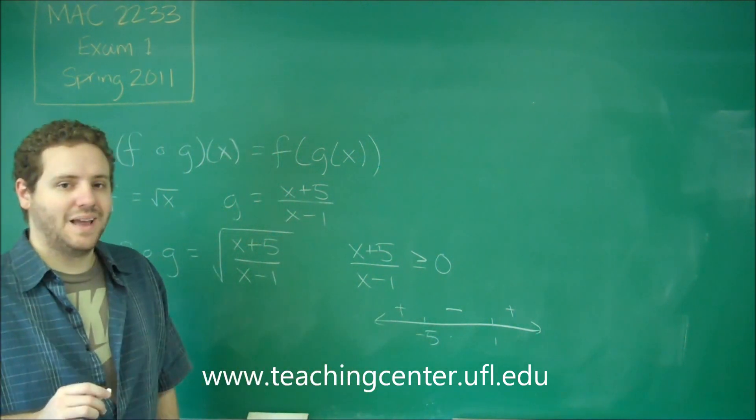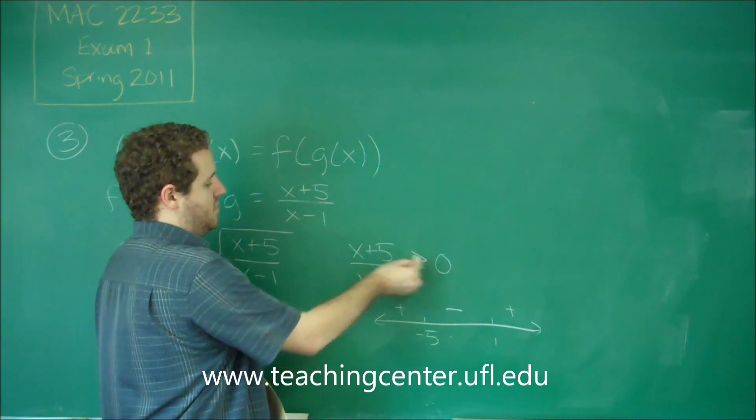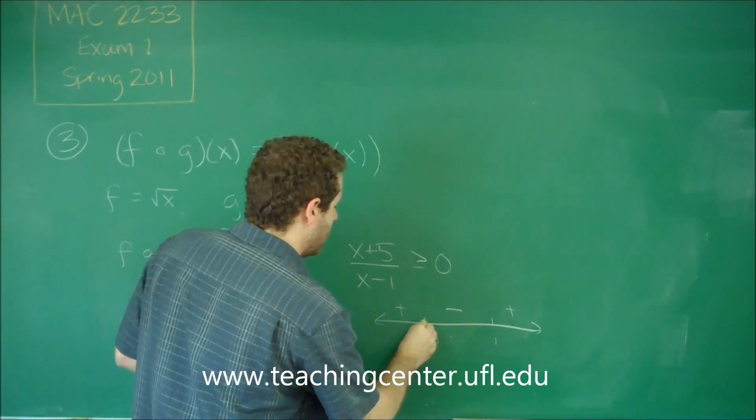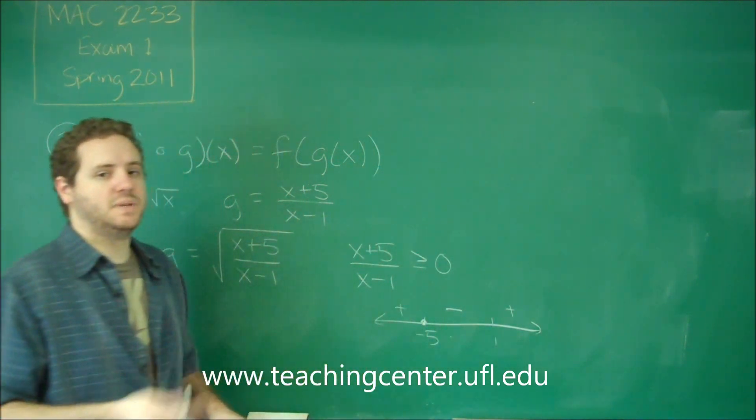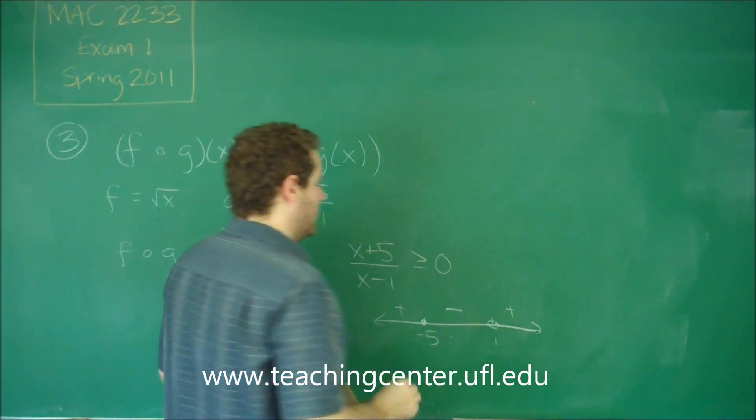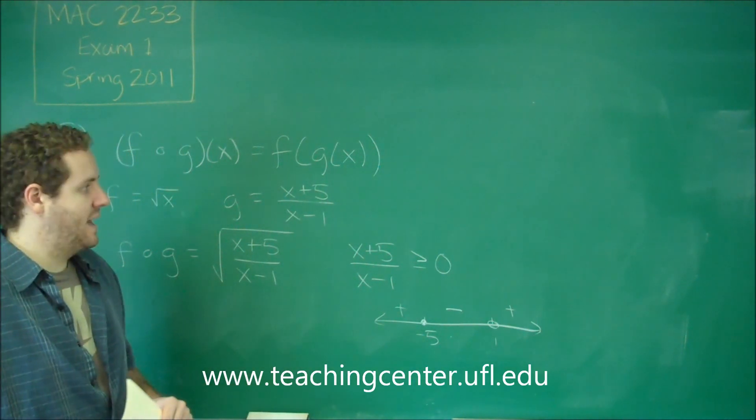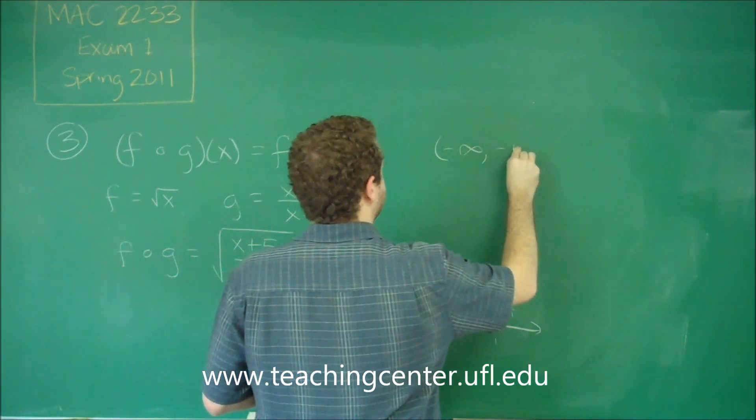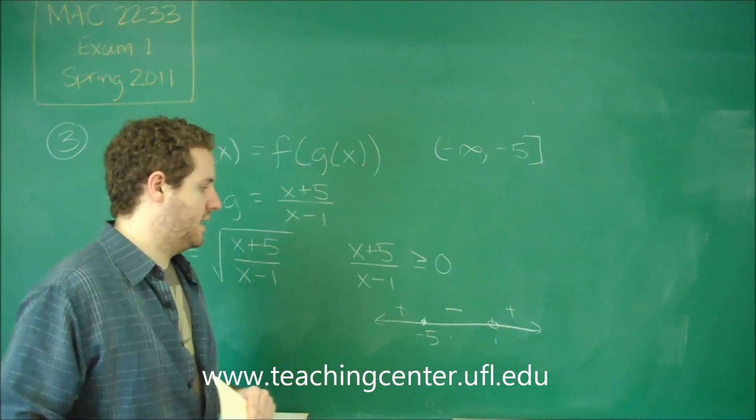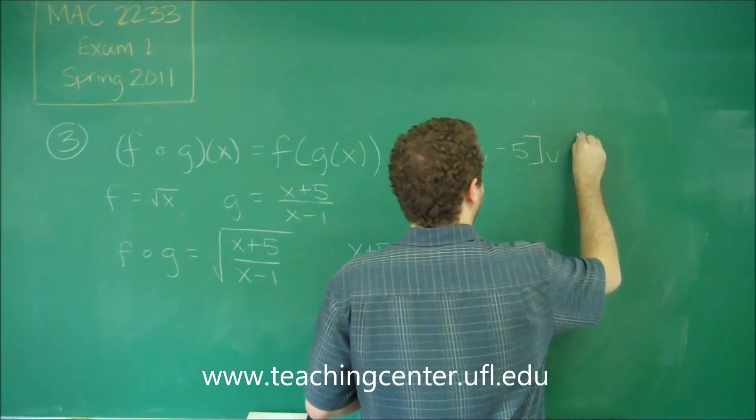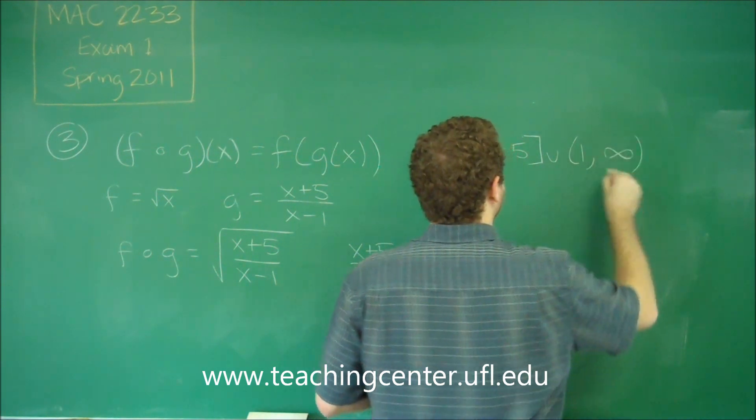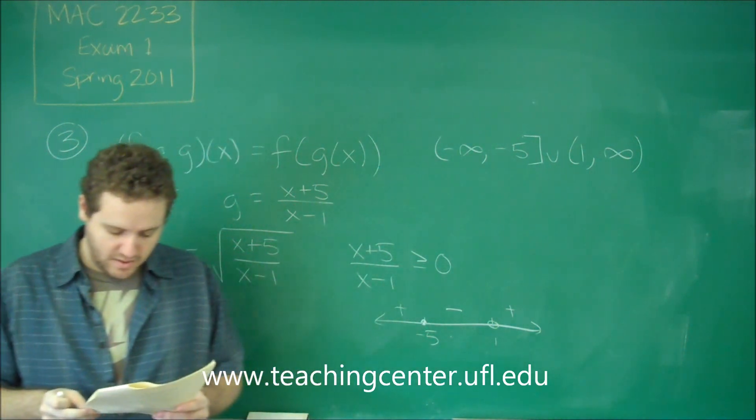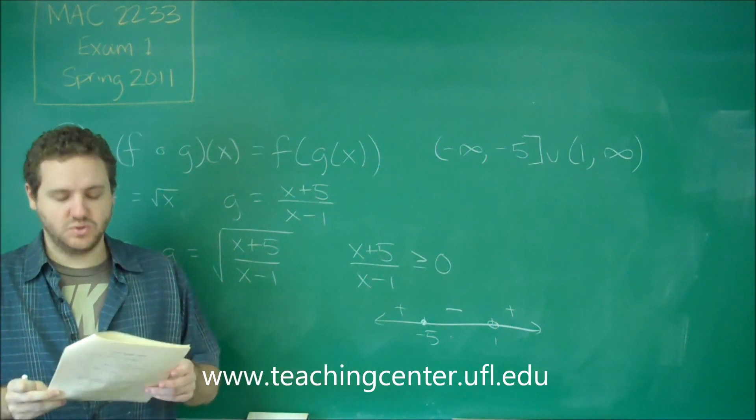Lastly, we need to check the endpoints. Negative five is okay because this was greater than or equal to. So this is a closed circle. One is definitely not okay because we would be dividing by zero. So now if we write that in interval notation, we're going to get negative infinity up to negative five with a bracket. And we're going to have one to infinity with a parentheses on one because that was an open circle there. So that, of course, then leads us to answer choice D.